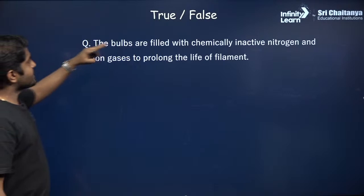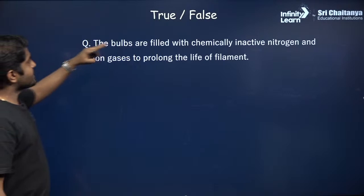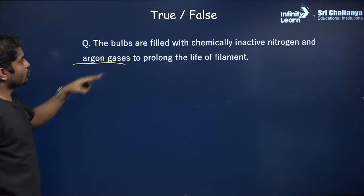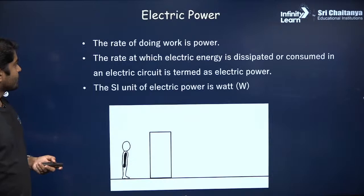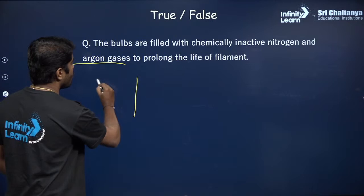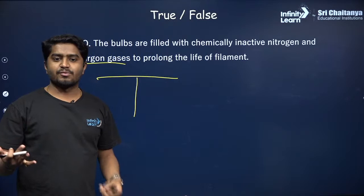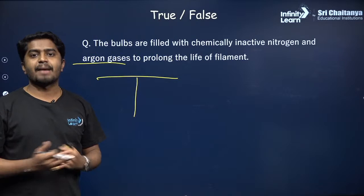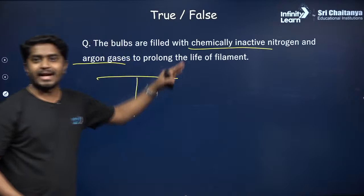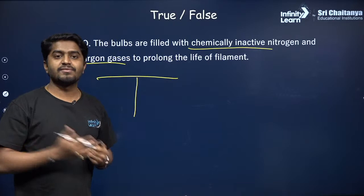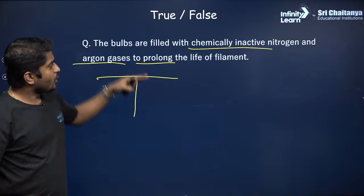True or false: Bulbs are filled with chemically inactive gases like nitrogen and argon to prolong the life of the filament. This statement is true. If we used oxygen, it would react with the filament. Inactive gases like nitrogen and argon do not react with the tungsten filament, thus prolonging its life.